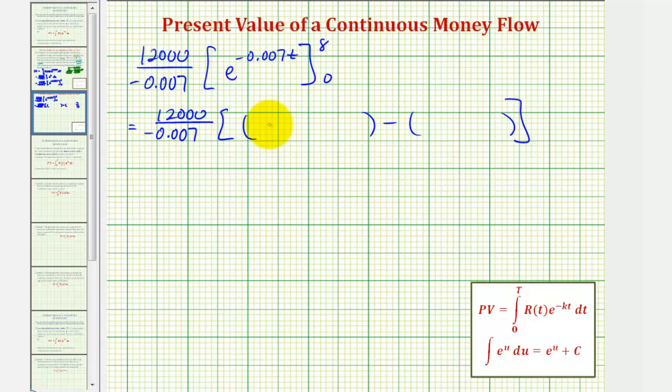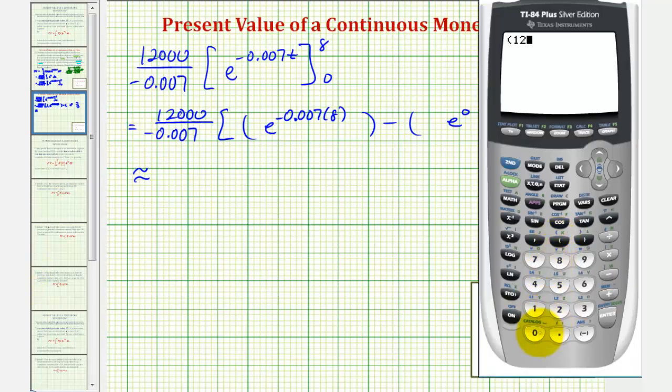So when t is equal to eight, we would have e raised to the power of negative 0.007 times eight. And then when t is zero, we just have e raised to the power of zero, which would be one. Let's go ahead and evaluate this on the calculator. We have 12,000 divided by negative 0.007, and then times e raised to the power of negative 0.007 times eight. And then minus e to the zero, which is just minus one. And enter.